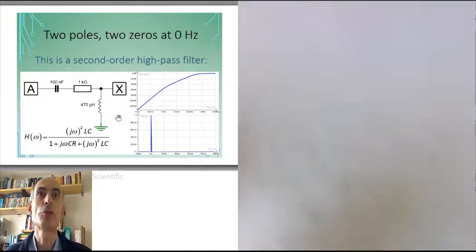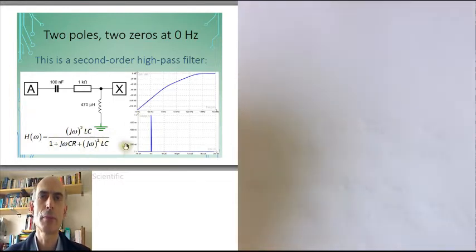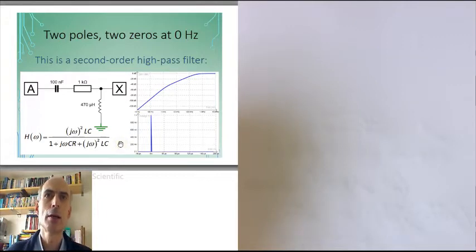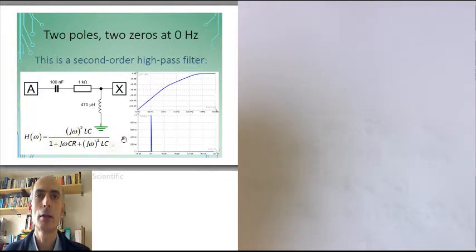We can derive the frequency response just as before, and we'll get this expression. From this we can determine the initial value of the step response. That's going to be 1, because the value of the frequency response when omega is infinite is 1. And we can determine the final value, and that's going to be 0, since the value of the frequency response when omega is 0 is 0.